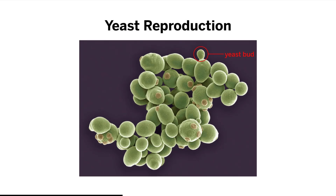This image shows how yeast reproduce. These are yeast cells. Yeast cells produce buds — the bud gets bigger and bigger until it breaks away and becomes an individual cell. Scientists have observed that when yeast gets more energy storage molecules, they can make more buds, which means they can reproduce more.